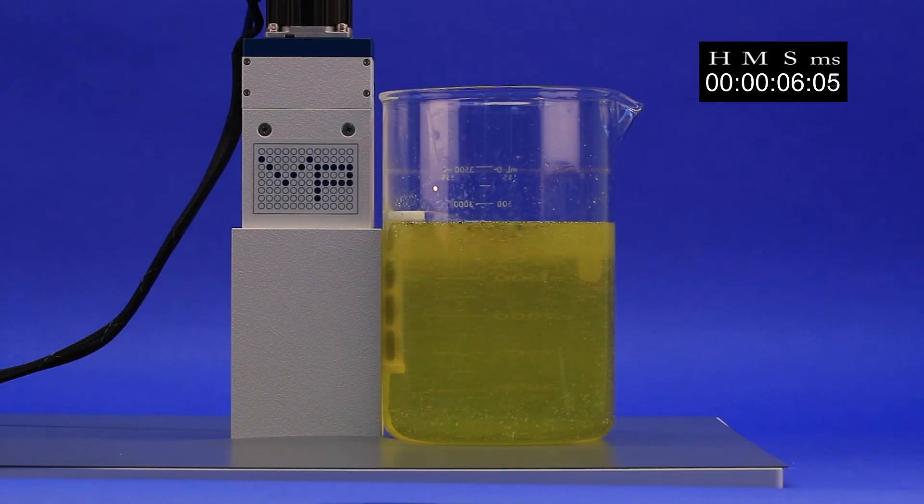This is vegetable glycerin, which is viscous. You can see how the VP710C5 can easily stir a large amount of viscous solution.